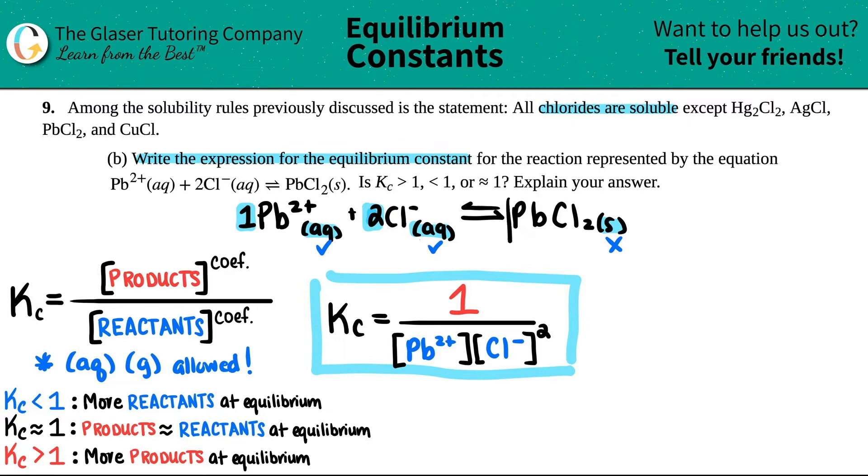If the Kc is greater than 1, you favor the product side, which means that you have way more of this than these two. And then if the Kc is equal to 1, products are roughly equal to the reactants, which means that these would roughly be the same.